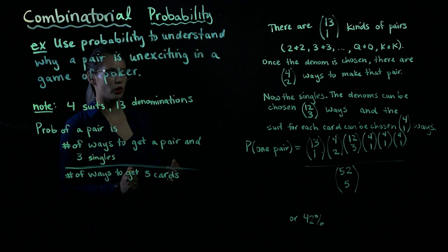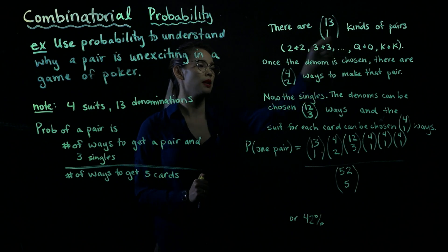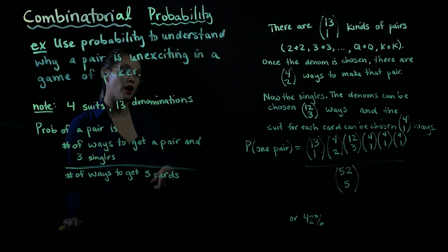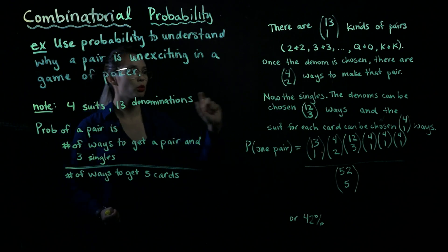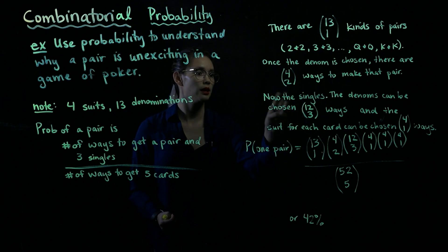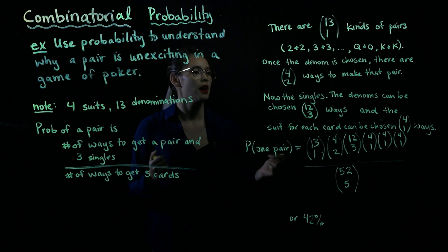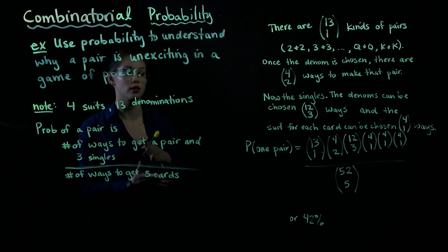Now onto the singles. If we have chosen one of these 13 to be the denomination for the pair, then that means we cannot have another card of that, otherwise we would have a triple. That leaves 12 other denominations and we need three singles, and so that means we need them to be different denominations. We need 12 choose 3 different denominations.